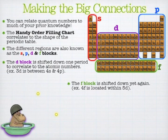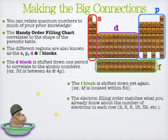Now I still think the handy order of filling chart is easier, but it is kind of neat to see how this reflects those electron patterns you might have learned a long time ago, the 2, 8, 18, 32, etc.